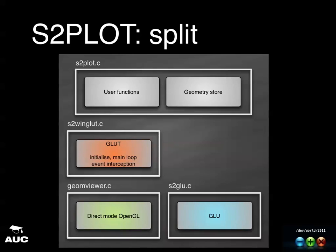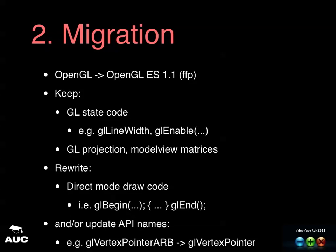Now I've got to handle the fact that I have direct mode OpenGL — I need to change that to non-direct mode, array mode. I've got a little bit of work to do with GLU — there are only about three or four functions I use from GLU, so that's okay. We can go to the Mesa code for inspiration. And then I've got to deal with the transfer from GLUT through to view controllers. The migration is pretty easy. You can keep all of your GL state code. Because we're going to ES 1.1, you can use your projection and model view matrices as you always have in OpenGL.